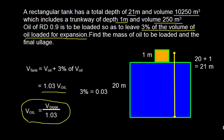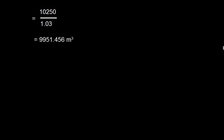Therefore, volume of oil = volume of tank divided by 1.03. Since the volume of the tank is 10250 cubic meters, dividing by 1.03 gives us 9951.456 cubic meters.